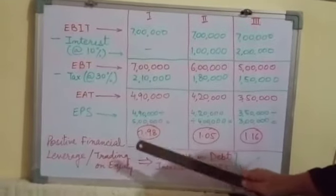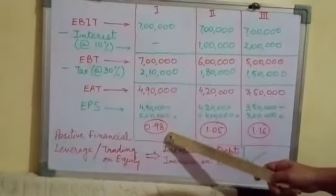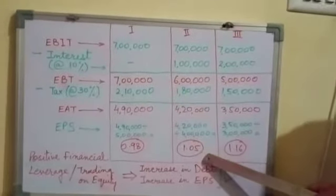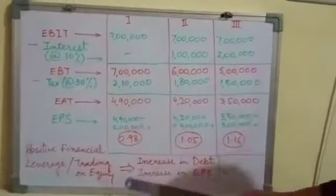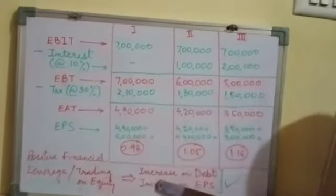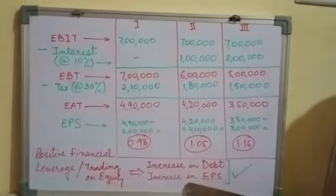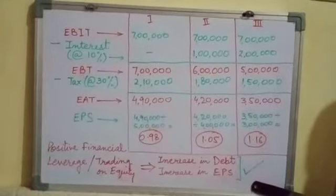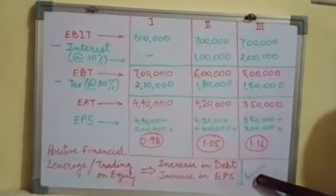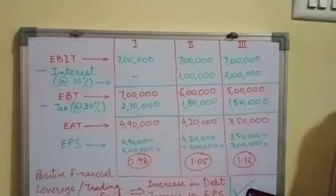We observe that earnings per share in situation 1 is 0.98, which increases to 1.05 in situation 2, and further increases to 1.16 in situation 3. This is the concept of trading on equity, also called positive financial leverage. With the employment of more debt in the capital structure, the earnings per share of the real owners increases. This positive aspect must be considered while deciding the proportion of debt in total capital employed.